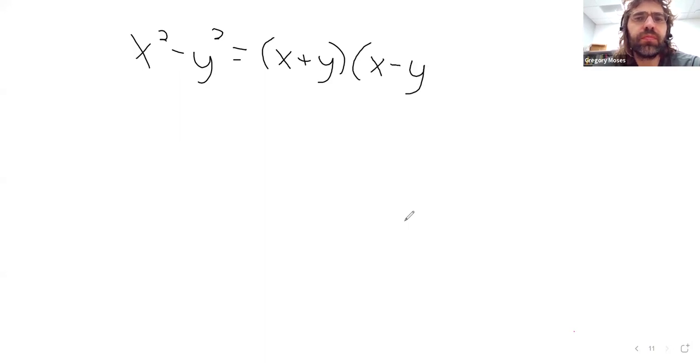The first topic is essentially factoring. So, you may know from algebra, in fact, we gave this as an example of an identity in an earlier video. That x squared minus y squared can be factored as x plus y times x minus y.